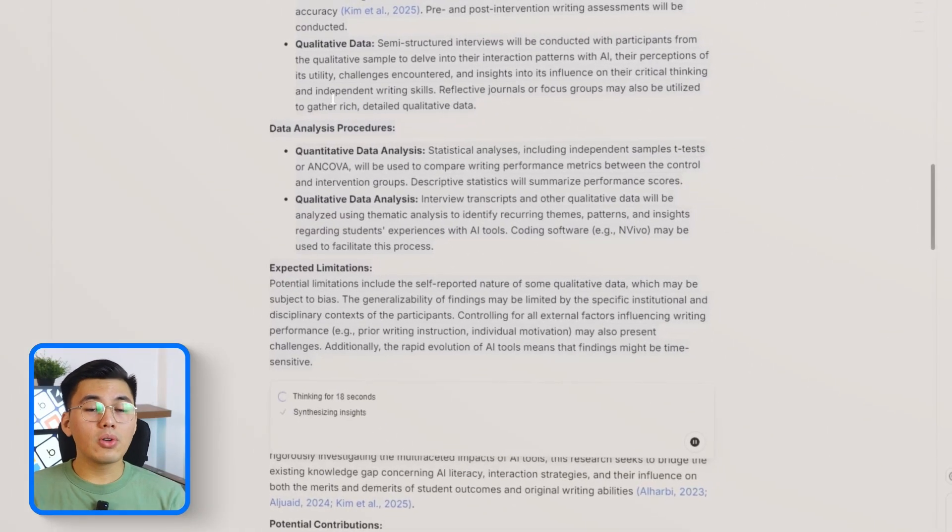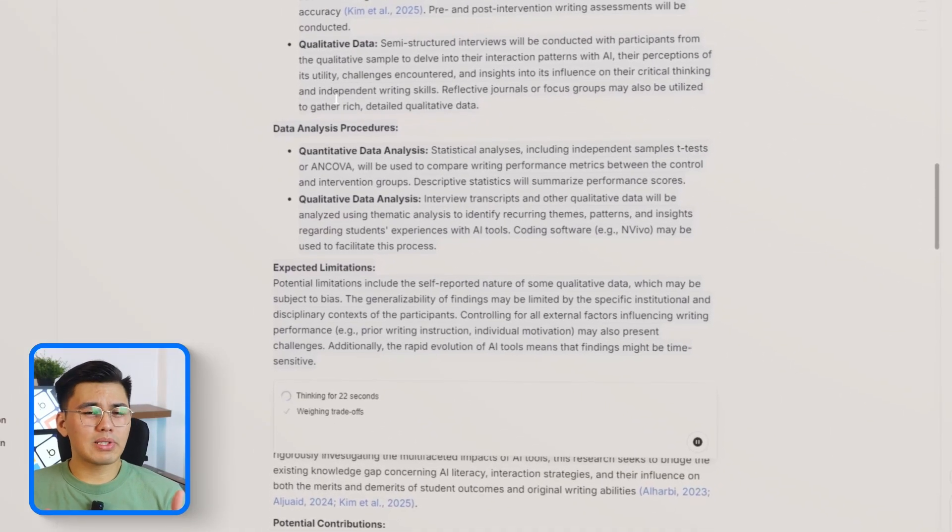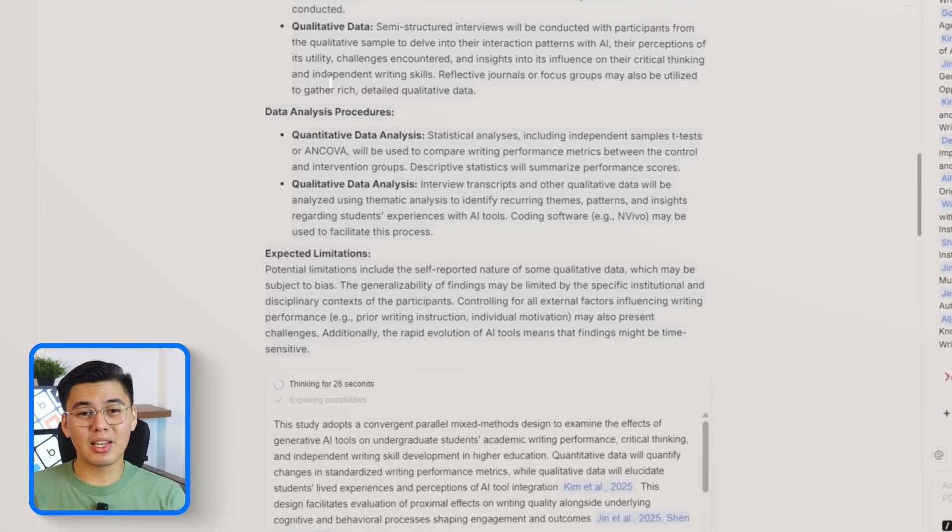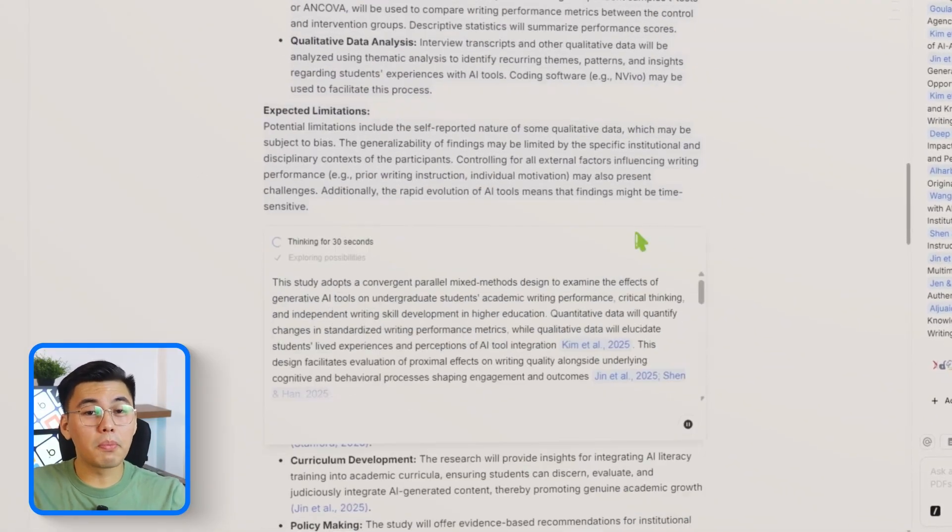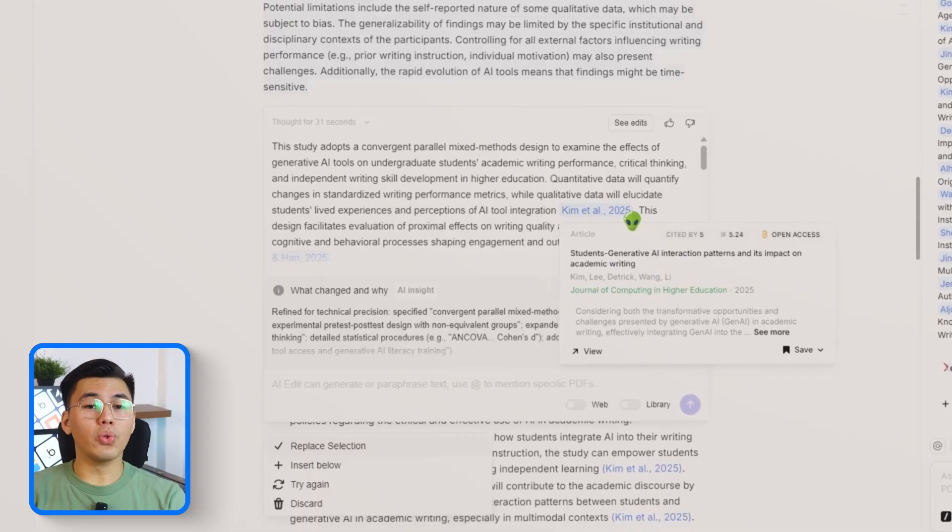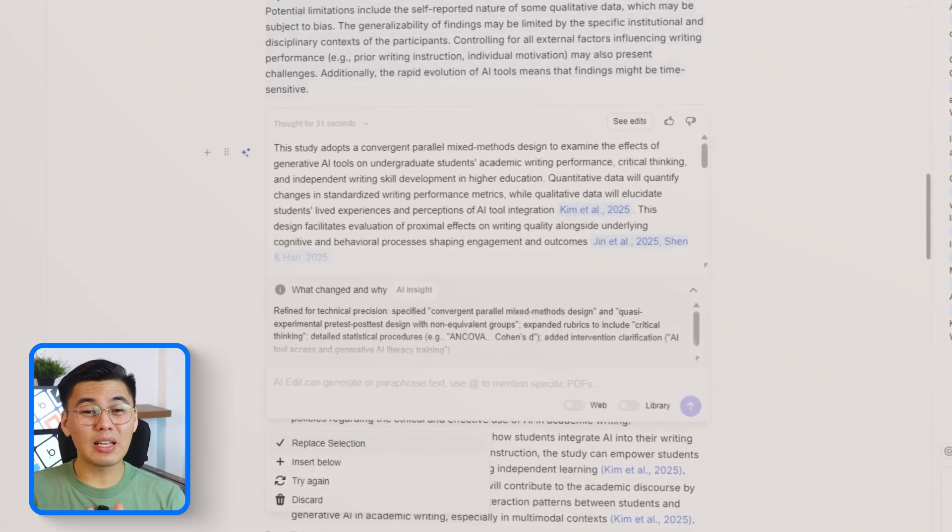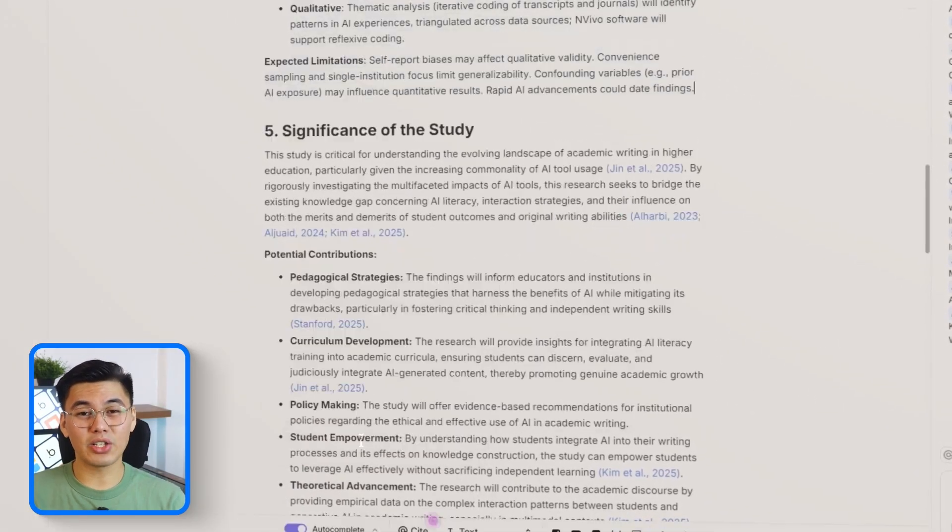credible plan. The AI also fills in missing pieces, like sampling details or expected limitations, so the section feels more complete and methodologically sound. You'll notice that it becomes significantly more detailed than the raw initial output.